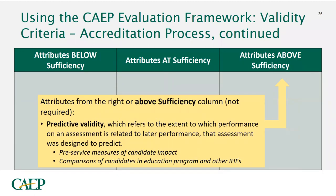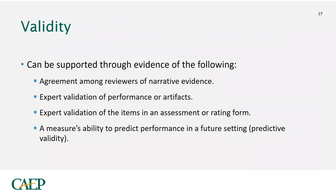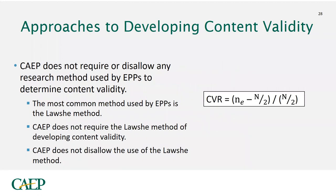The 'above sufficiency' right side — which is not required — involves predicting, such as doing something in pre-service to predict whether that person will be a qualified teacher a year or two down the road, or comparisons of candidates across higher ed institutions or content courses. For CAPE, validity can be supported through: agreement among reviewers that the description is measuring the same thing, expert validation of performance or artifacts, expert validation of items in an assessment or rating form, and the measure's ability to predict future performance.